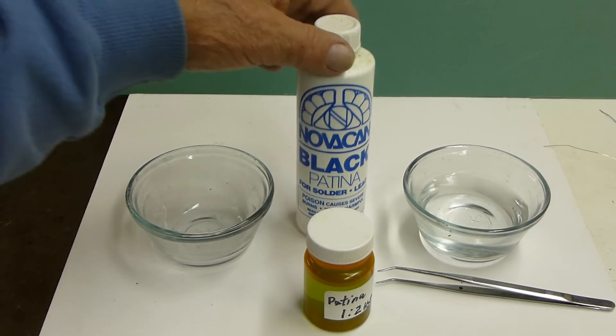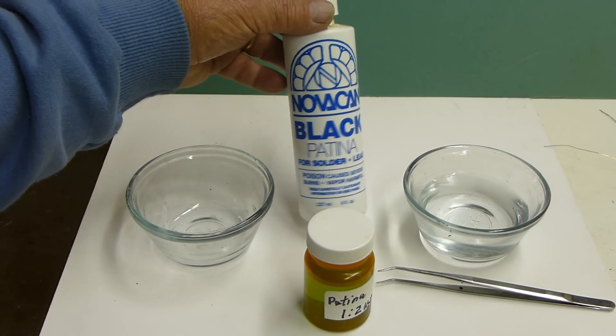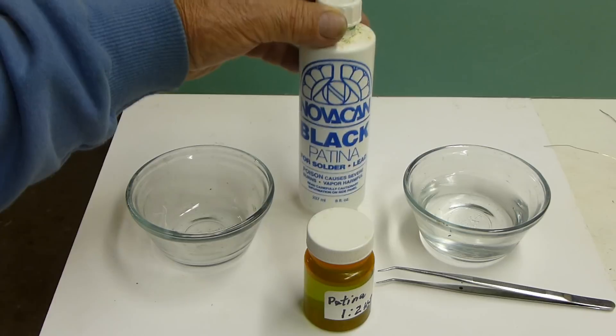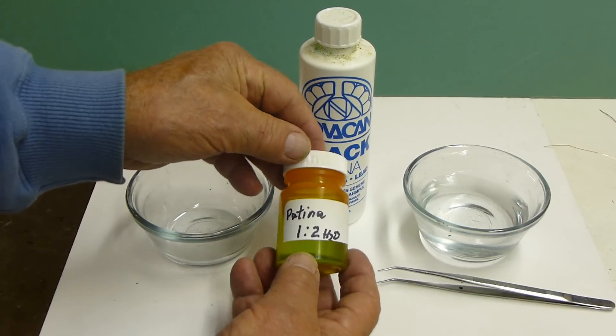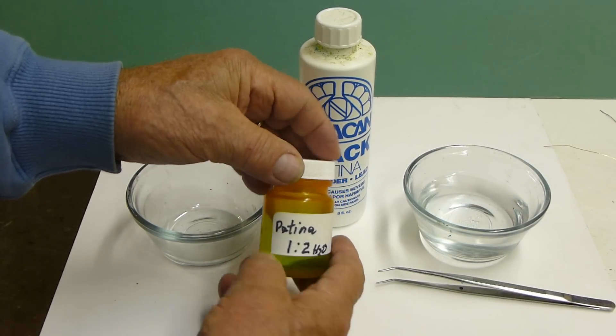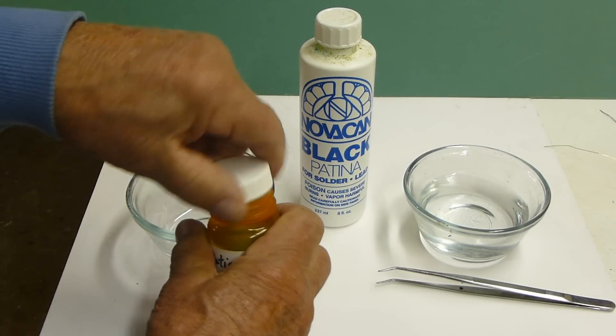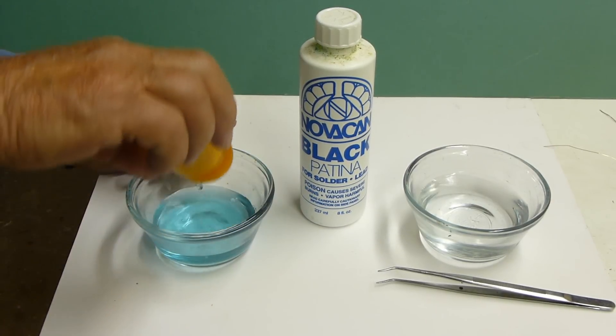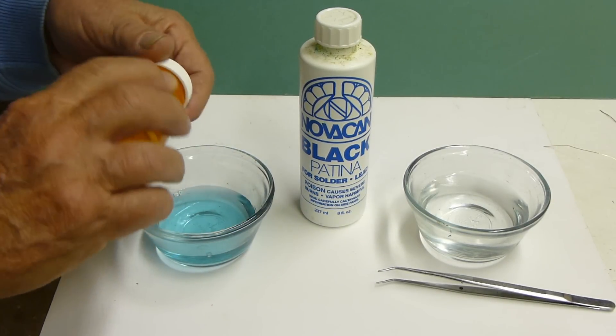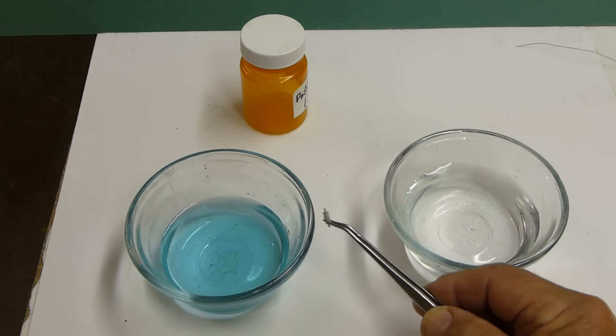I've been using this Novolac or Novocaine blacking patina that's left over from my old stained glass window work. I diluted that with water, one part or two parts of water, and that is what I will use to blacken some of these items that I just showed you.